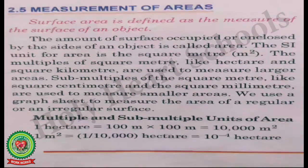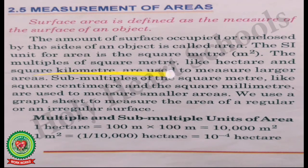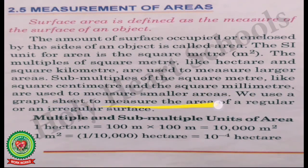Let us read from the book for better understanding. Surface area is defined as the measure of the surface of an object; the amount of surface occupied or enclosed by the sides of an object is called its area. The SI unit for area is the square meter. Multiples of square meter — bigger units such as hectare and square kilometer — are used to measure larger areas. Sub-multiples — smaller units like square centimeter and square millimeter — are used to measure smaller areas. A graph sheet is used to measure the area of a regular or irregular surface.